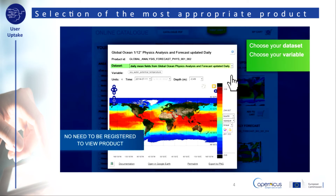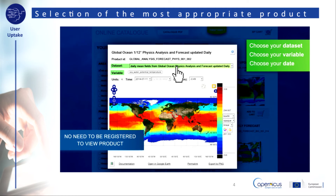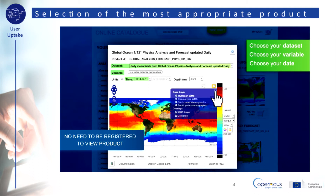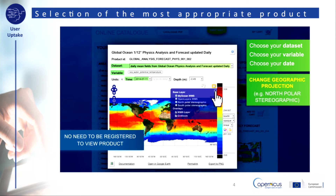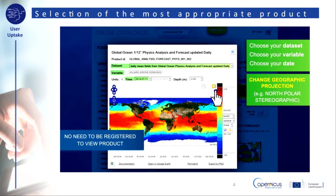From this button you can choose your dataset, choose your variable, choose your date, and you can also change geographic projections. You can save your product as a KMZ, and you can even make a movie.